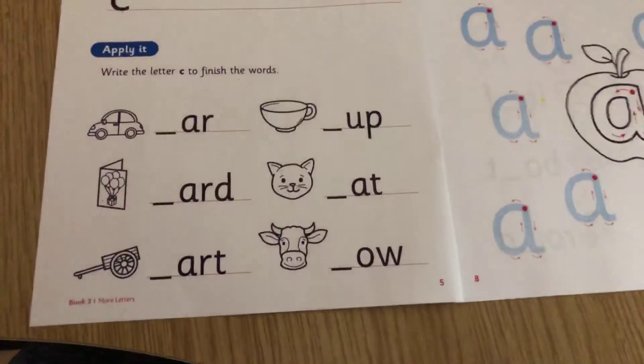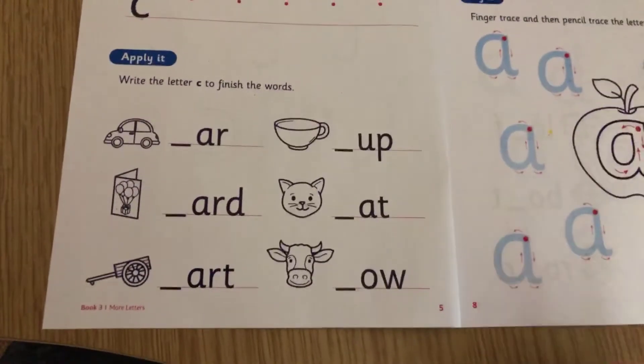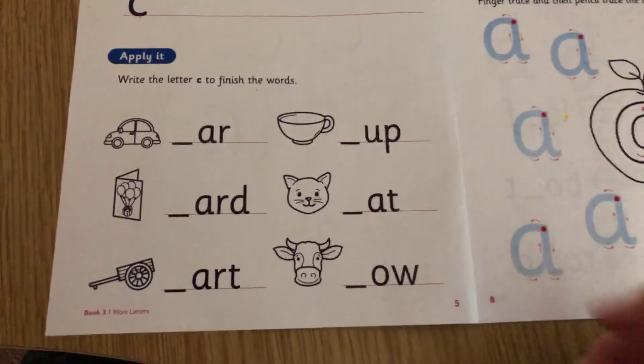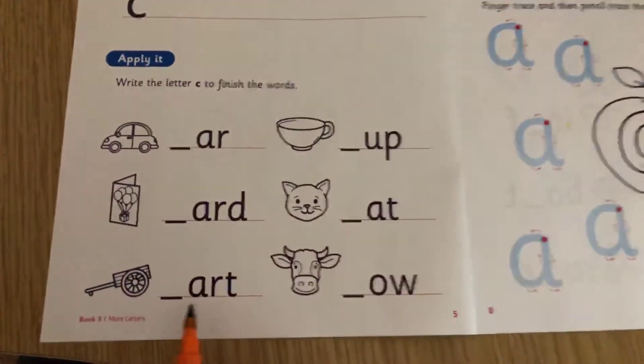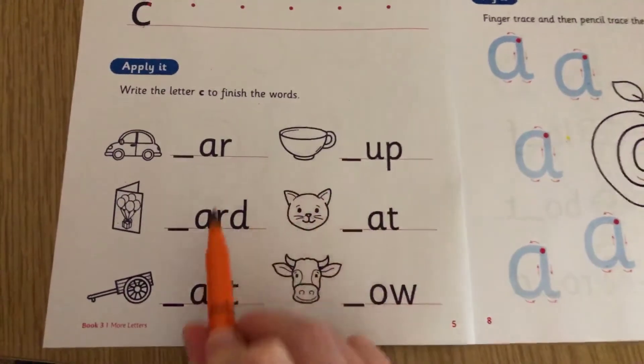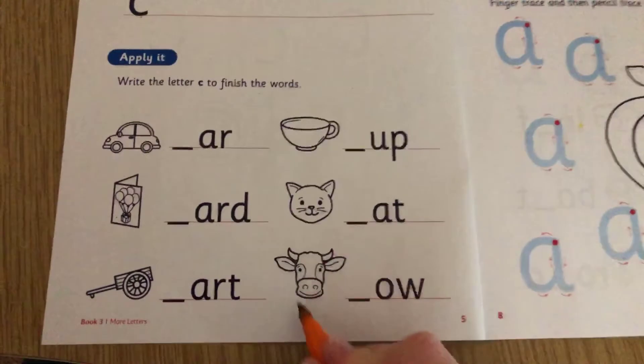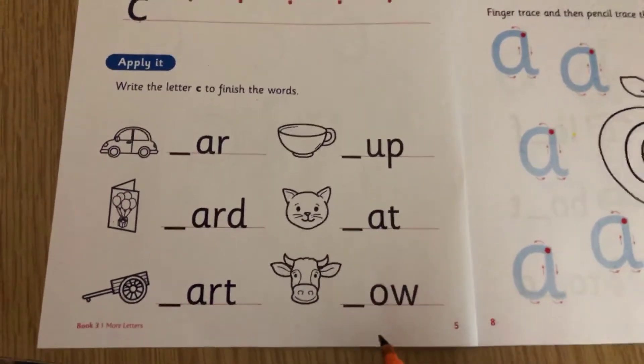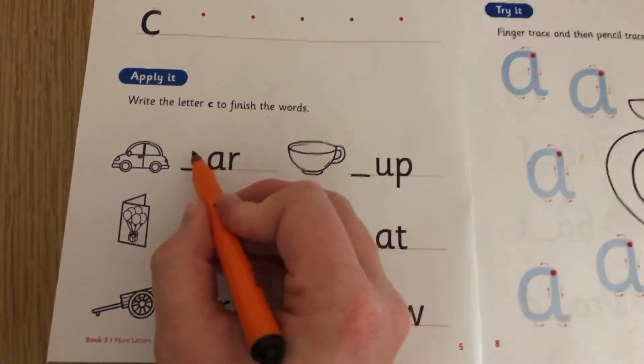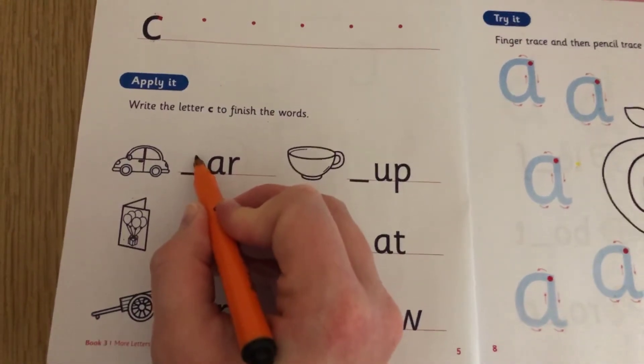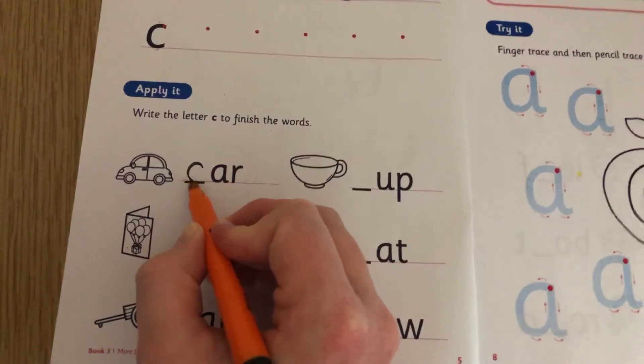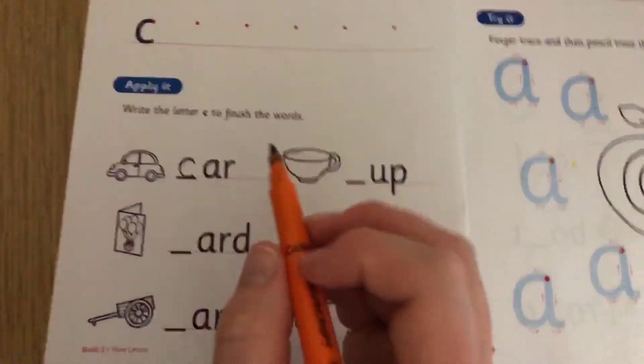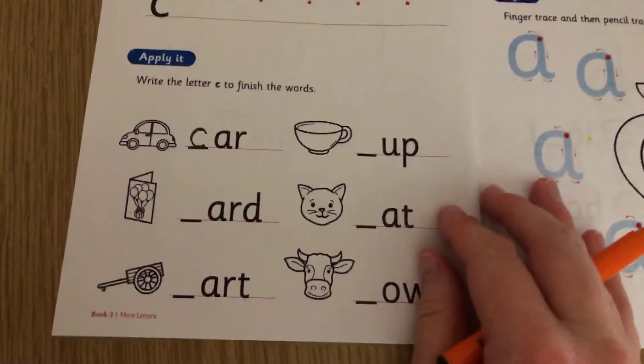All right, now all of these words, look, start with the C. And if we put the C on them all, I know there's a picture, but we actually can read all of these, apart from I don't think we've learned this one here. So carefully put your C here. Now it's got to be the same height, look, as those. So when you curve up, don't go higher than the other letters. Okay, we'll read it in a second.